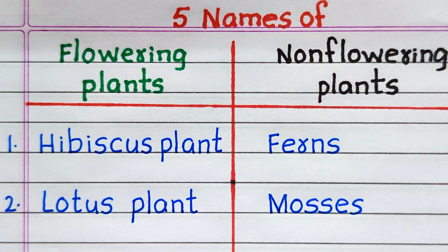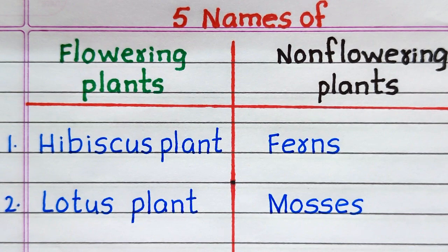Name of the first non-flowering plant is ferns. Second, mosses.